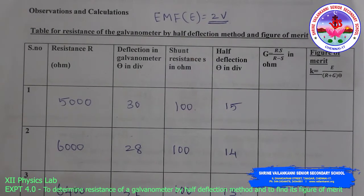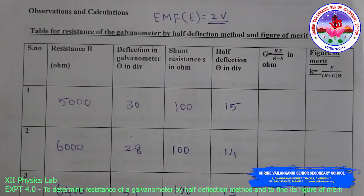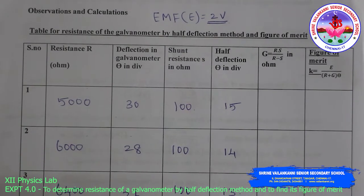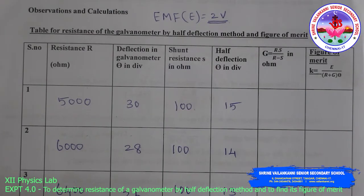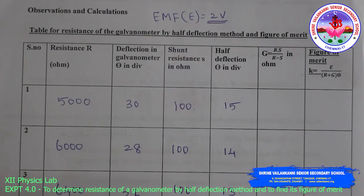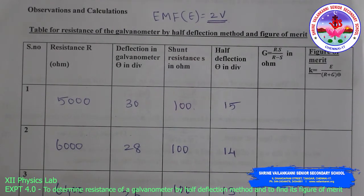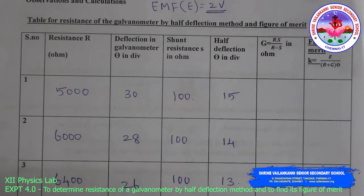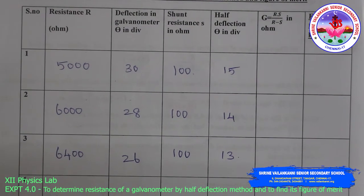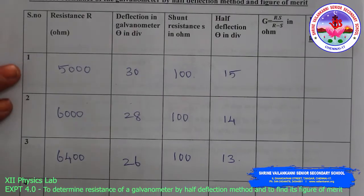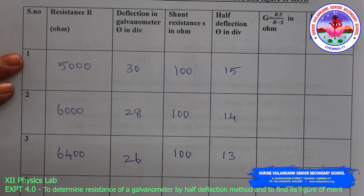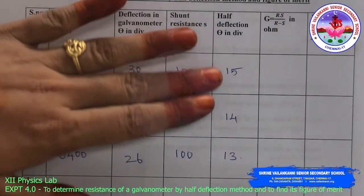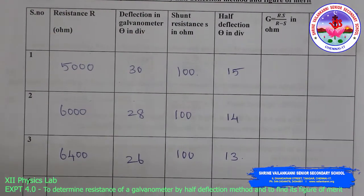See the tabular column for the resistance of the galvanometer by half deflection method and figure of merit. Columns: resistance R, deflection theta, shunt resistance S, G = R·S/(R − S), and figure of merit K = E/(R + G)·theta in ampere per division. For example, R = 5000, shunt S = 100, which gives half deflection — exactly 50.